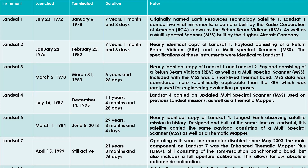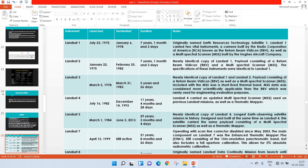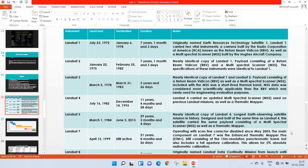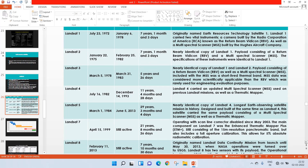Landsat 5 was the longest running satellite of the Landsat series. Landsat 7 was launched on April 15, 1999, and is still active, having served 21 years, eight months, and 26 days. Landsat 8 was launched on February 11, 2013, and is also still active, having served 7 years, 10 months, and 30 days. Landsat 6 is not in the table because it was a failed mission — the satellite failed to reach its orbit and therefore captured no data.